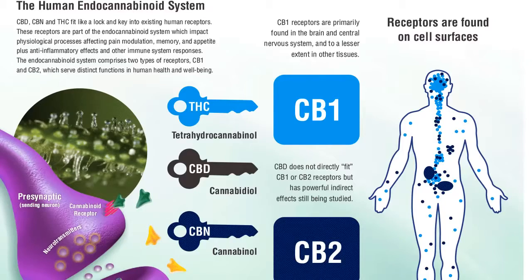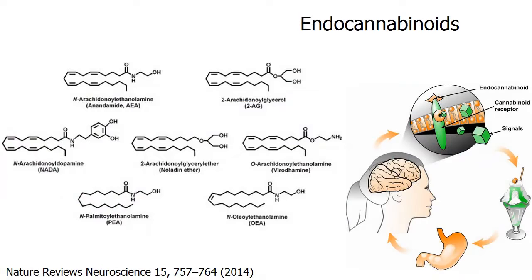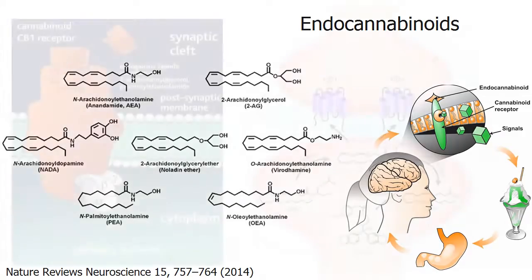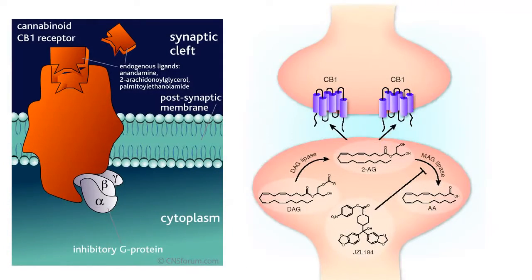First we need to understand the different classes of cannabinoids. Your body manufactures endocannabinoids, and these have abbreviated names like 2AG, AEA, and NADA. These substances are made by your cells to regulate the way your various systems work. In order for these signals to do anything, they have to be received, and for that we need a receptor protein on the surface of a cell. A cannabinoid receptor is a very specialized tool that detects one of these endocannabinoids and passes the signal to the cell to respond appropriately.